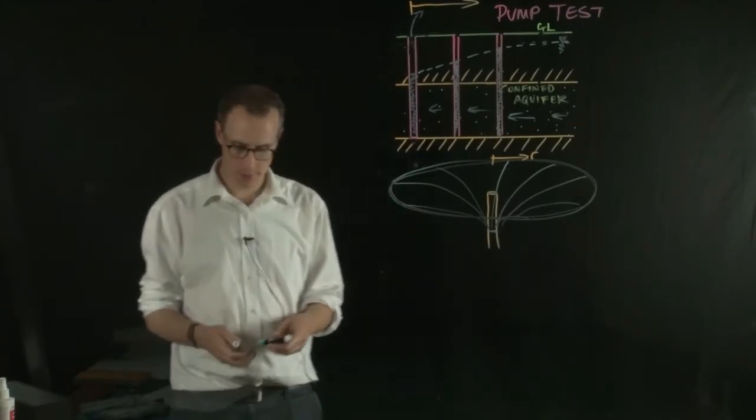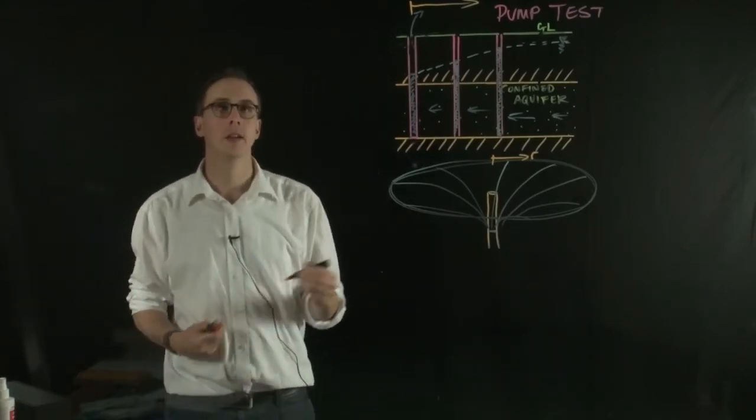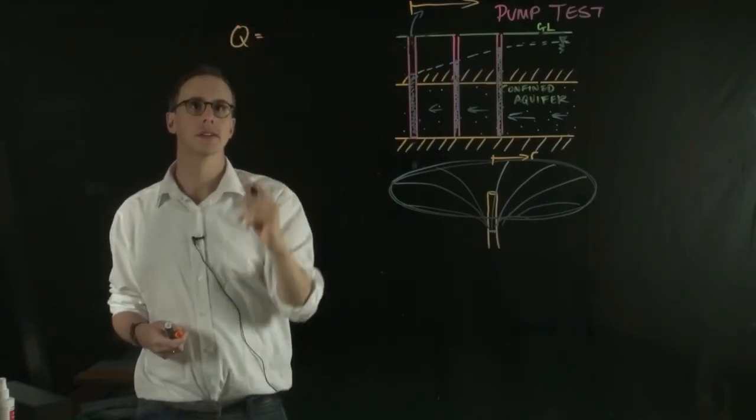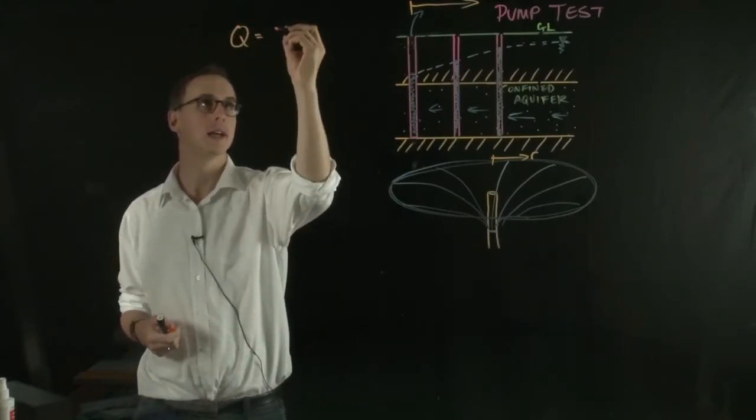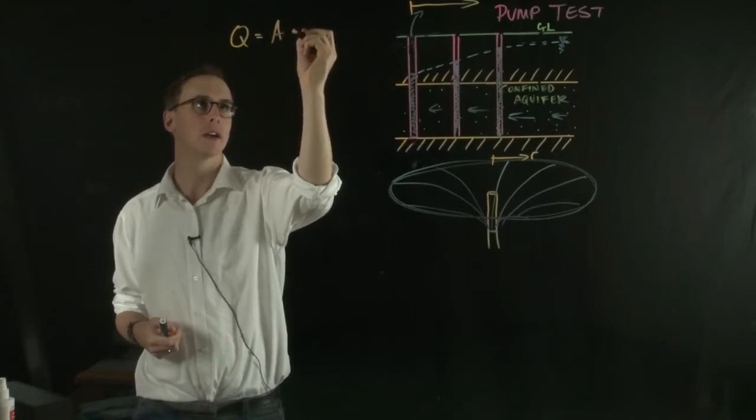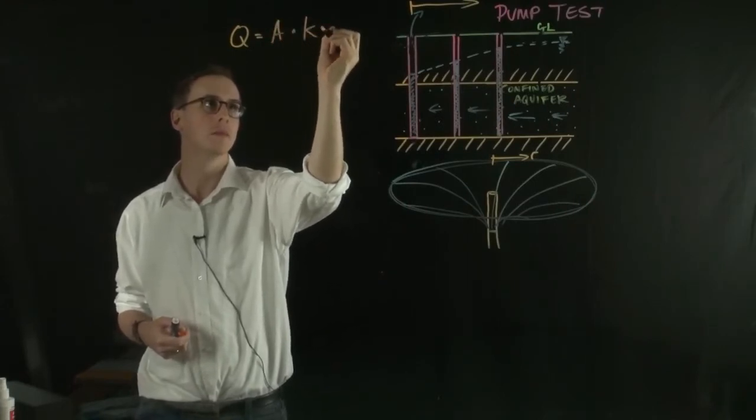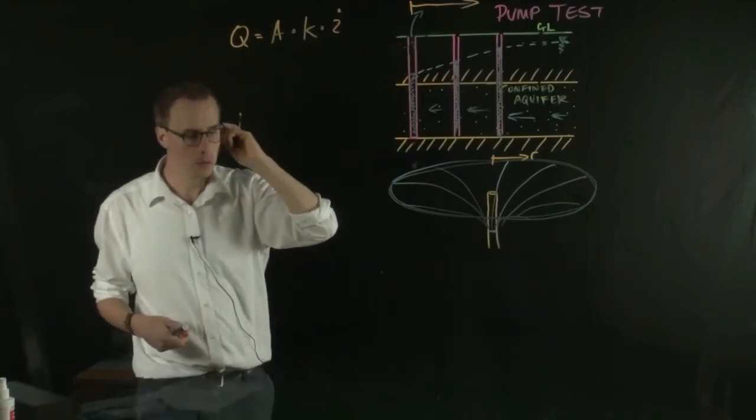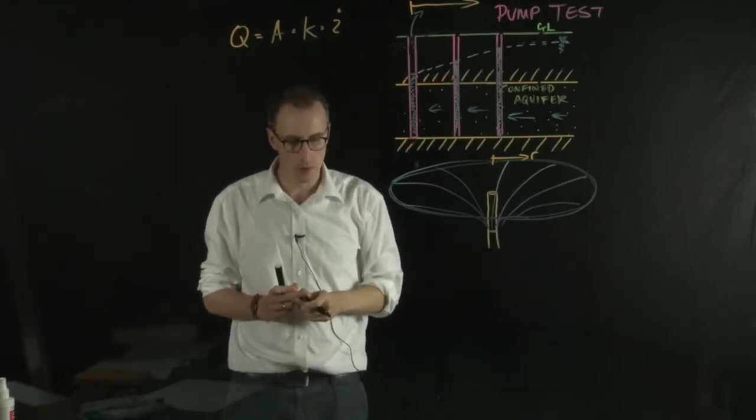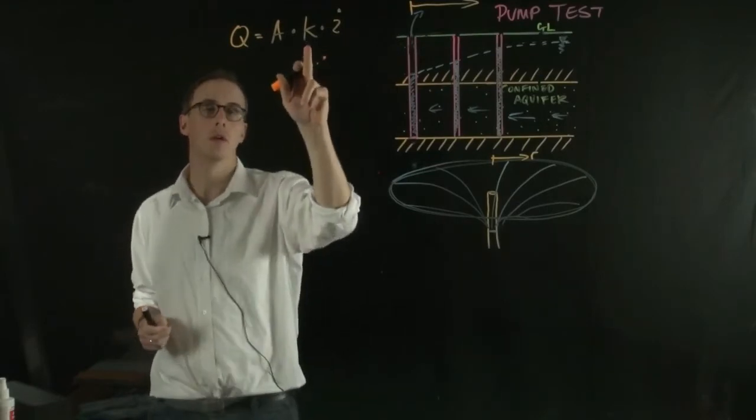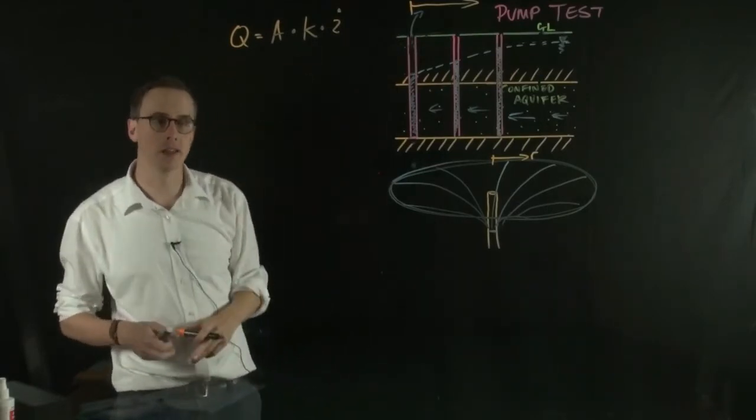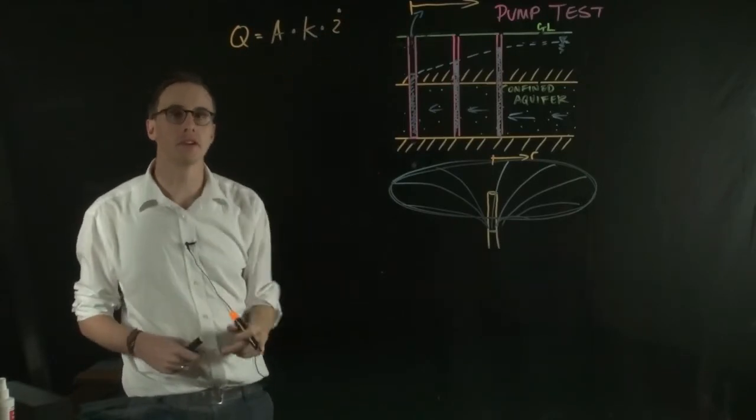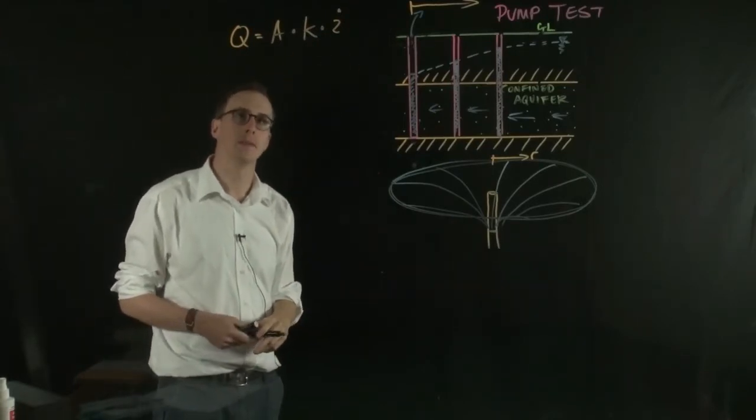So if we're starting to think about Darcy's law again, remember Darcy's law is Q equals A times K times hydraulic gradient. What we're doing this test for is to try and understand the permeability.